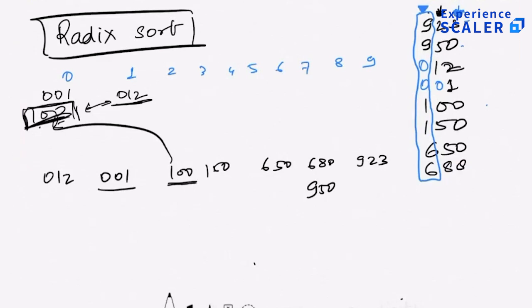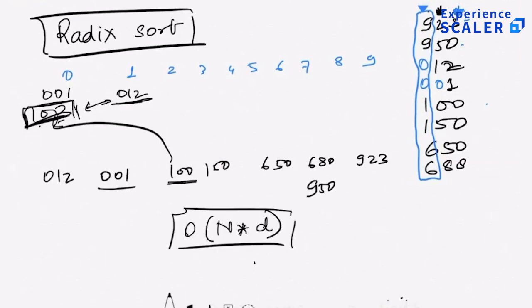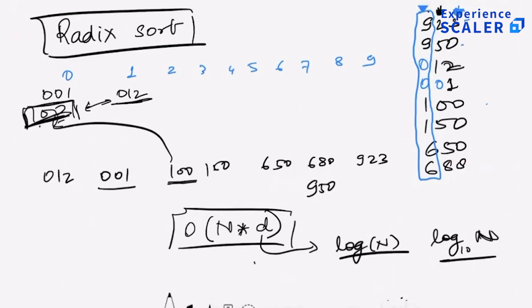You can do the same thing with bits — you'll only have two buckets, 0 and 1, instead of 10. When you go from LSB to MSB, MSB takes higher priority because it is the last deciding factor. When you go from MSB to LSB, LSB starts taking higher priority. Time complexity is N times number of digits. If D is the number of digits, that is your time complexity, and usually the number of digits is the same order as log N — specifically log base 10 of N, where N is the maximum number in the array.